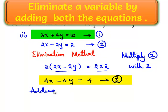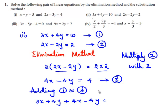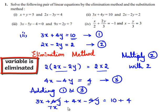Adding equation number 1 and 3, the left hand side gives 3x plus 4y and 4x minus 4y. The right hand side of equation 1 is 10 and of equation 3 is 4, so this becomes 10 plus 4. Now, 3x plus 4x is 7x, and 4y and minus 4y will be cancelled.